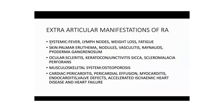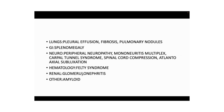Extra-articular manifestations of rheumatoid arthritis — a common viva question. Systemically: fever, lymph node enlargement, weight loss, fatigue. Skin: palmar erythema, rheumatoid nodules, vasculitis, Raynaud's phenomenon, pyoderma gangrenosum. Ocular: scleritis, keratoconjunctivitis sicca, scleromalacia perforans. Musculoskeletal: osteoporosis. Cardiac: pericarditis, valvular defects, accelerated ischemic heart disease leading to heart failure. Lungs: as discussed. GI: splenomegaly. Neurology: peripheral neuropathy, mononeuritis multiplex, carpal tunnel syndrome, spinal cord compression, and the dreaded atlanto-axial joint subluxation. Haematology: Felty's syndrome, glomerulonephritis, and secondary amyloidosis.